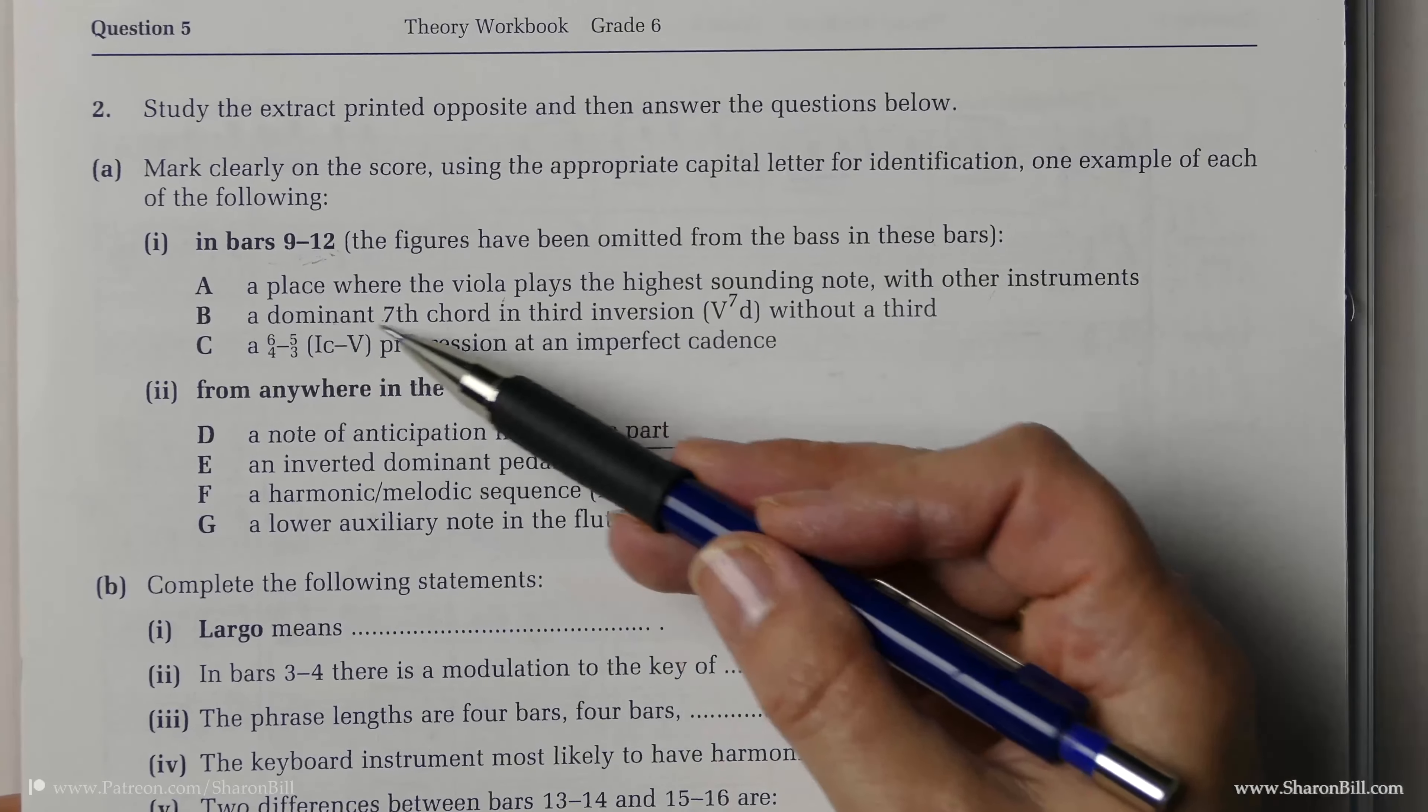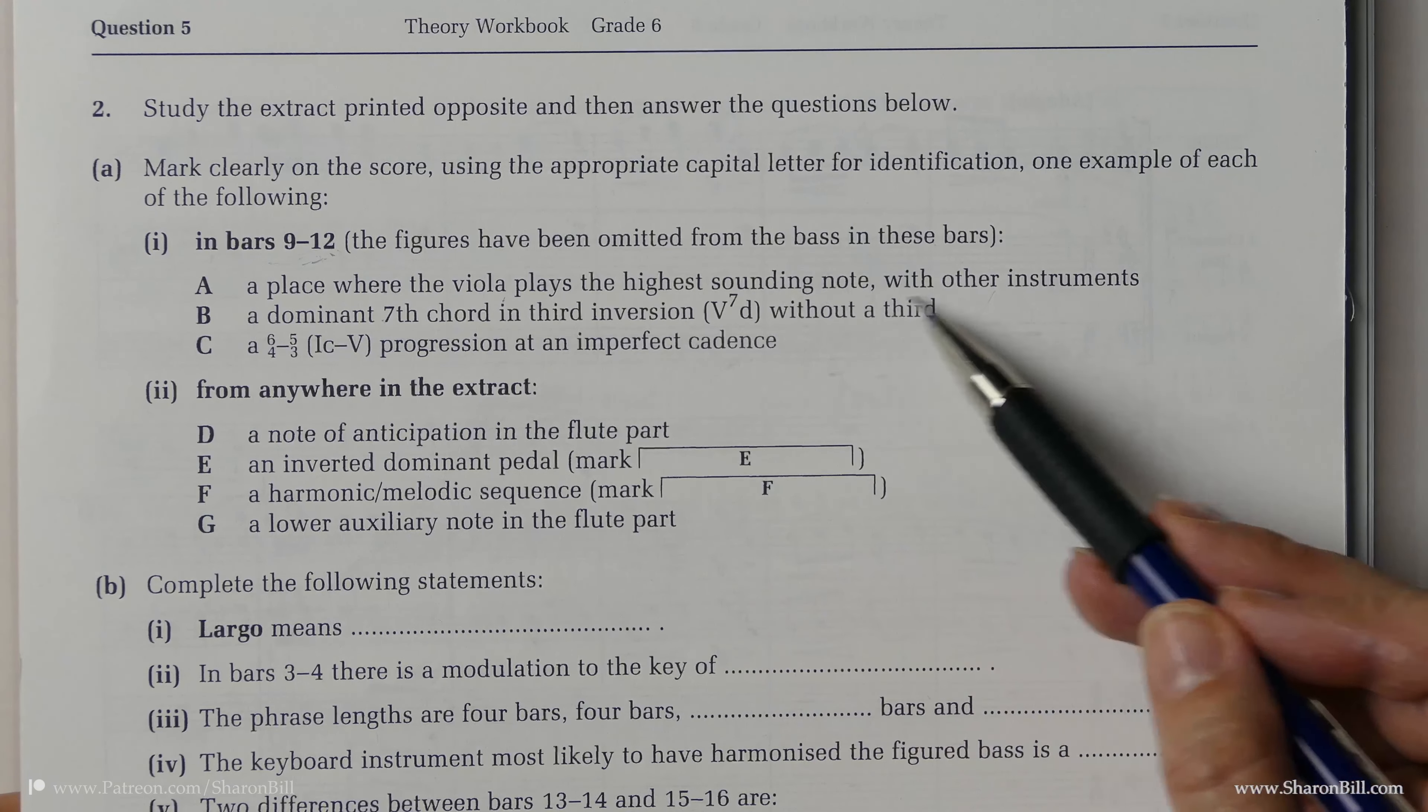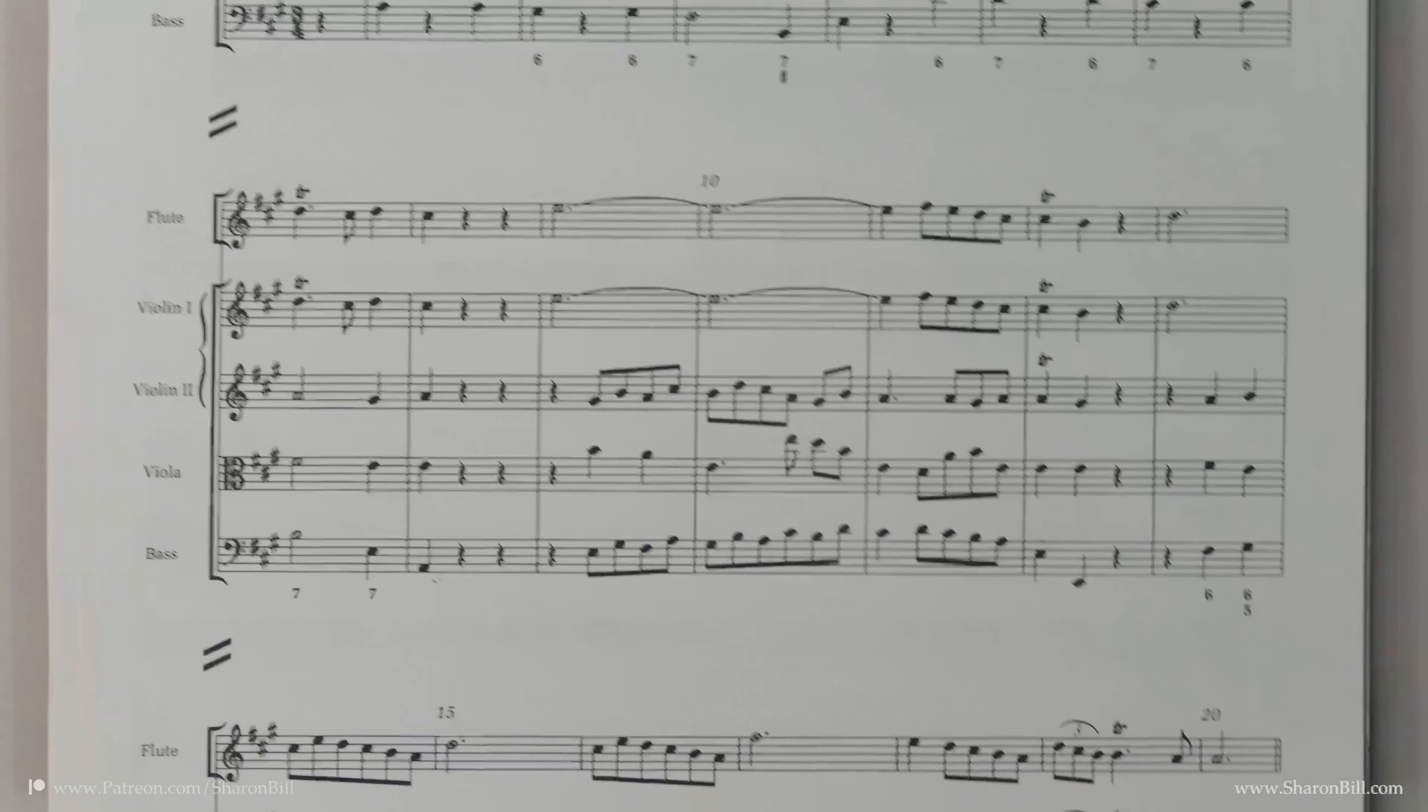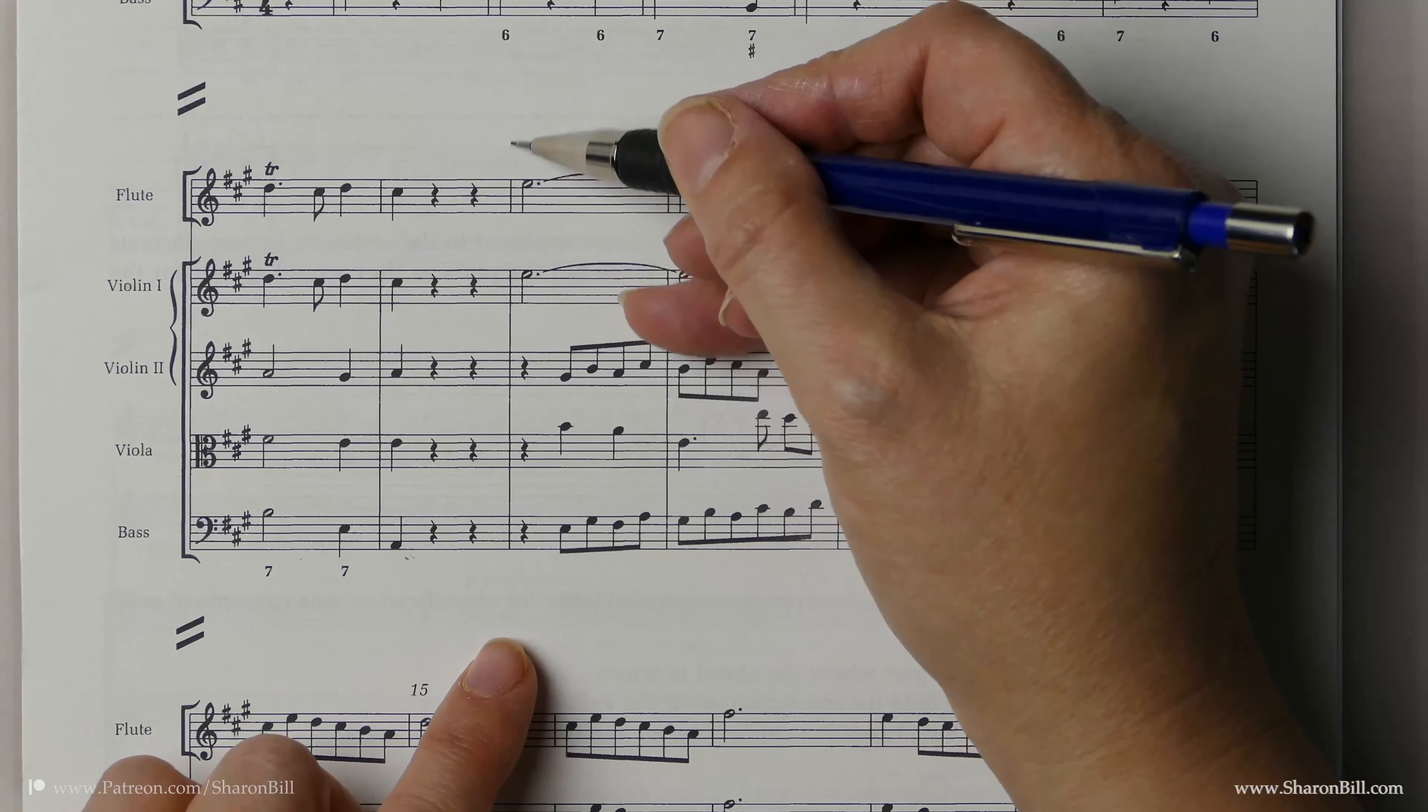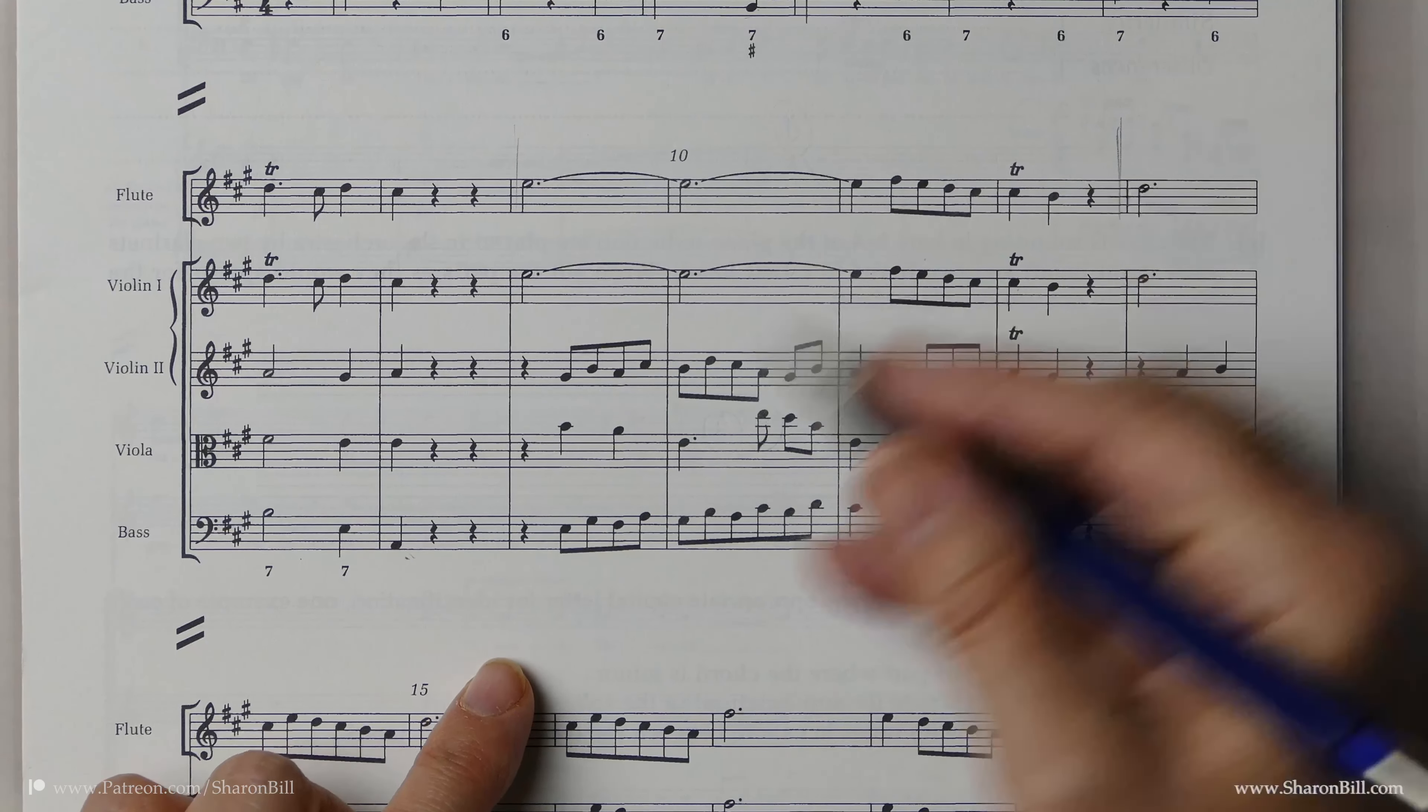First of all, we need to find a place where the viola plays the highest sounding note with other instruments. So bars 9 to 12. Let's see where we're looking. Bars 9, 10, 11, 12. So we're looking at just this short little section here.